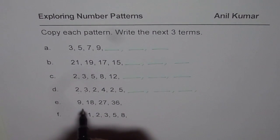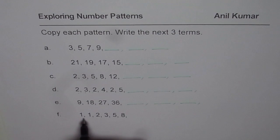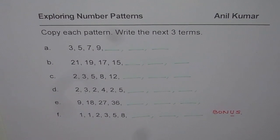So likewise, 9, 18, 27, 36, next three terms. 1, 1, 2, 3, 5, 8. This is a bonus question, right? This is very difficult. So this is a bonus question for you. You can take anybody's help to solve this question, correct? So these are the number patterns which we need to explore now, correct?